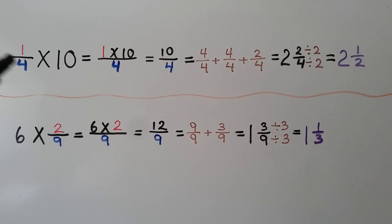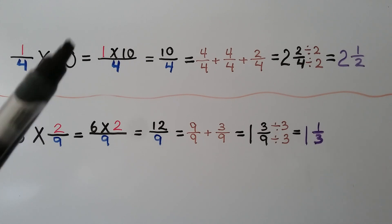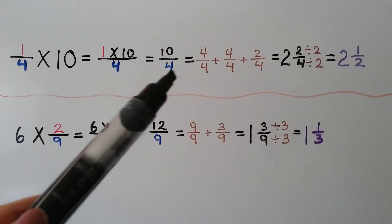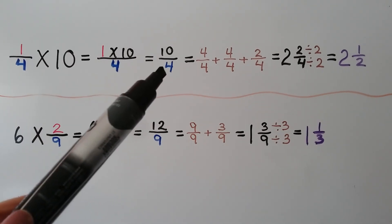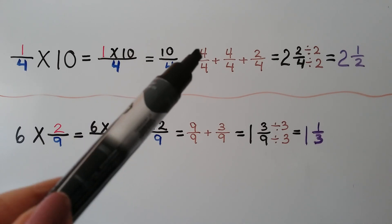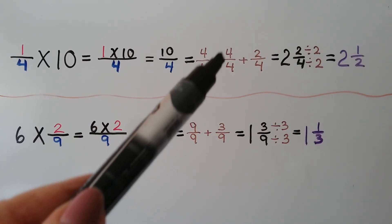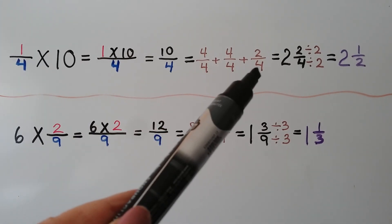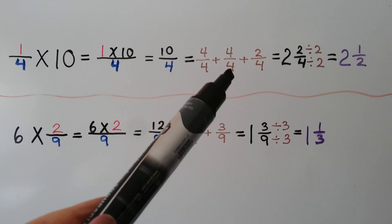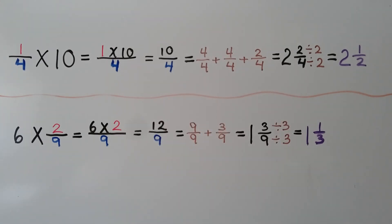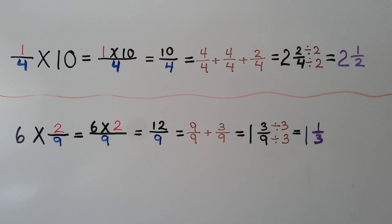Here we have 1 fourth times 10. We multiply the numerator times the whole number: 1 times 10 is 10. We slide the denominator over, we have 10 fourths, which is equal to 4 fourths plus 4 fourths plus 2 fourths. That means we have 2 whole and 2 fourths. The 2 fourths can be divided by 2. In simplest form, we get 2 and 1 half.